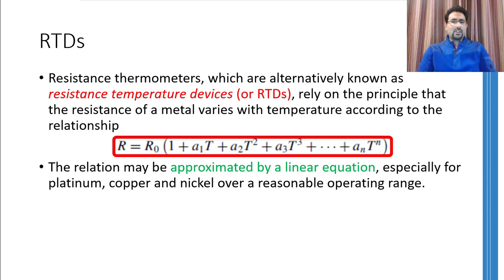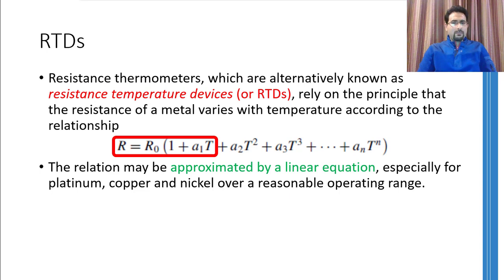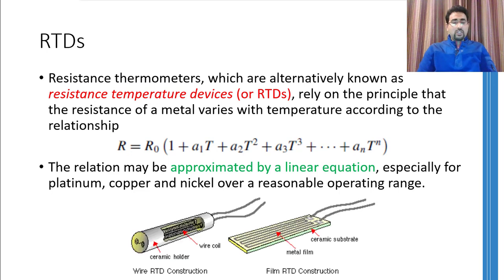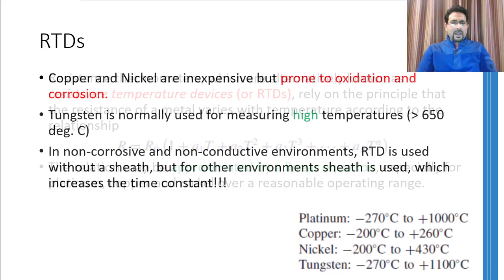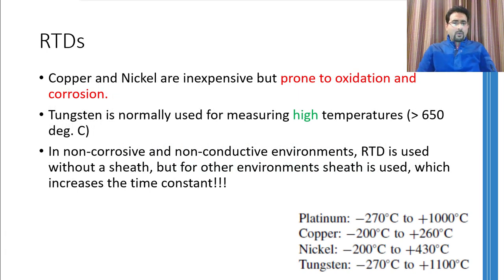RTDs rely on the principle that if the temperature of a metal varies, its resistance changes according to a polynomial relation — similar to the one used for thermocouples. If the temperature change is quite small, this non-linear relation can be approximated with a linear one. Especially for platinum, copper, and nickel, you can find a reasonable operating range for which this relation is linear. Normally, platinum thermometers are made in two forms: one where the coil is wound around a central mandrel, and another where a platinum film is deposited on a ceramic base. The coil type has a longer life, but film type RTDs can be made much smaller. Copper and nickel are also used but have a problem of oxidation and corrosion, while tungsten type RTDs are used to measure very high temperatures.